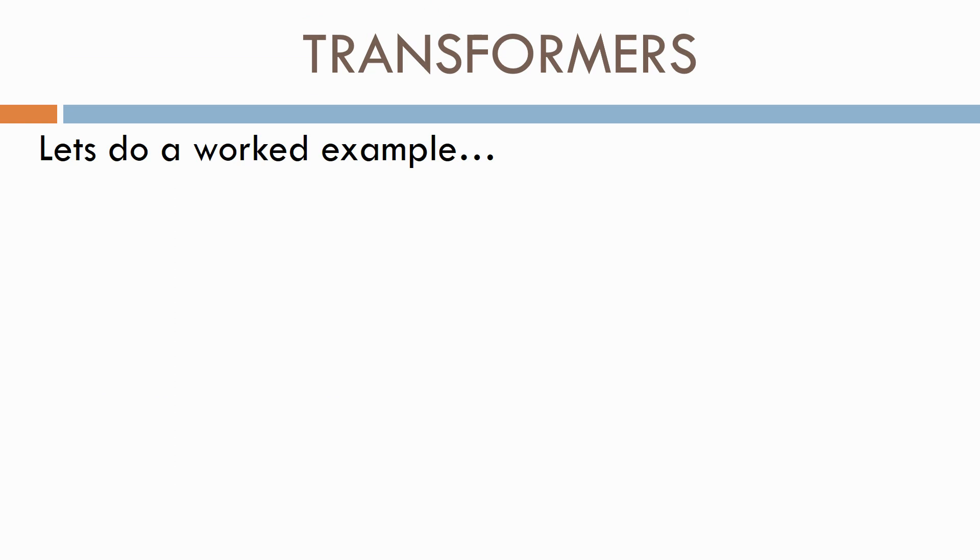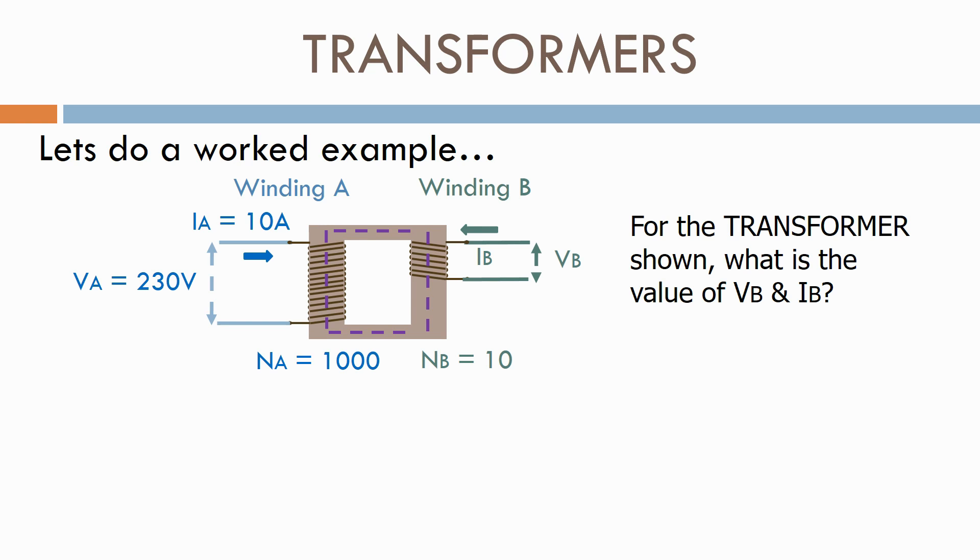Let's do a worked example. For the transformer shown, what is the value of VB and IB?